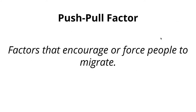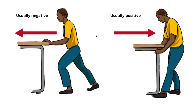Push and pull factors are factors or reasons that encourage or force people to migrate. Push factors are generally negative — they make people leave, such as wars and famines. Pull factors are usually positive, attracting people to move, such as job opportunities, better economies, and freedom.